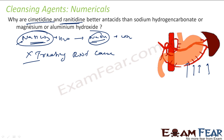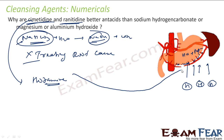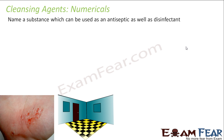Cimetidine and ranitidine are better antacids because they are antihistamines — they control the root cause. They interact with histamine receptors in the stomach. Normally, histamines contact these receptors and instruct the stomach to produce more HCl and pepsin. These medicines bind to the receptors instead, blocking histamines from signalling, so the stomach does not produce HCl and pepsin, and acidity is controlled.